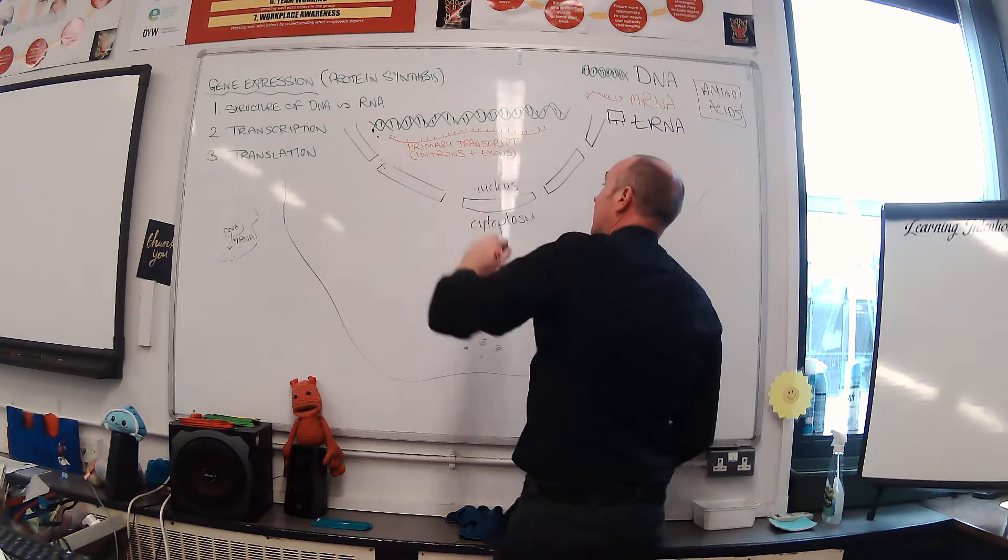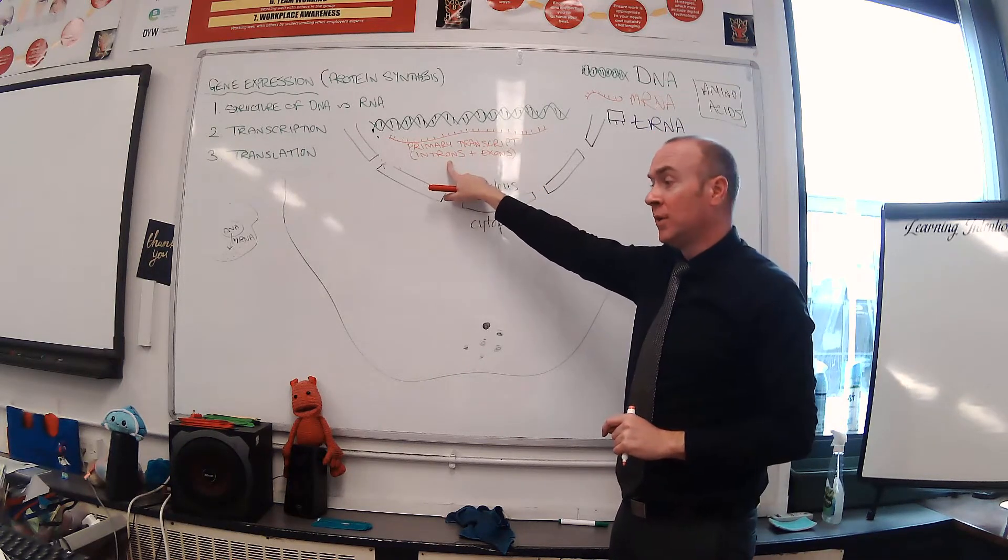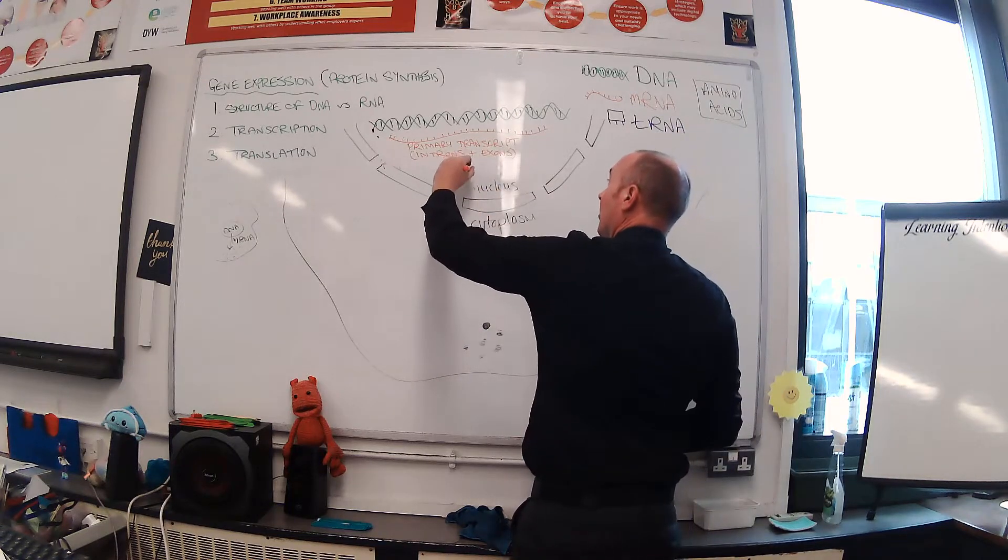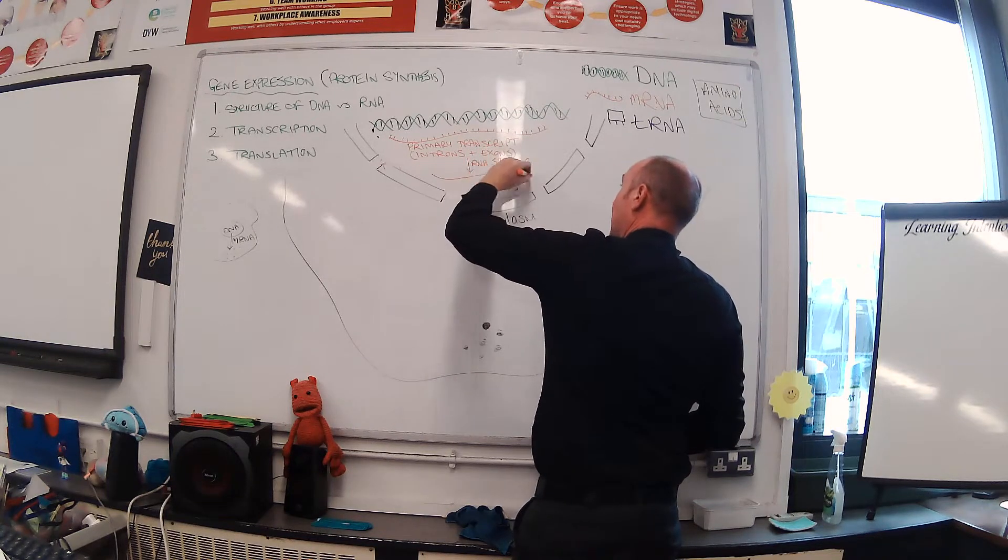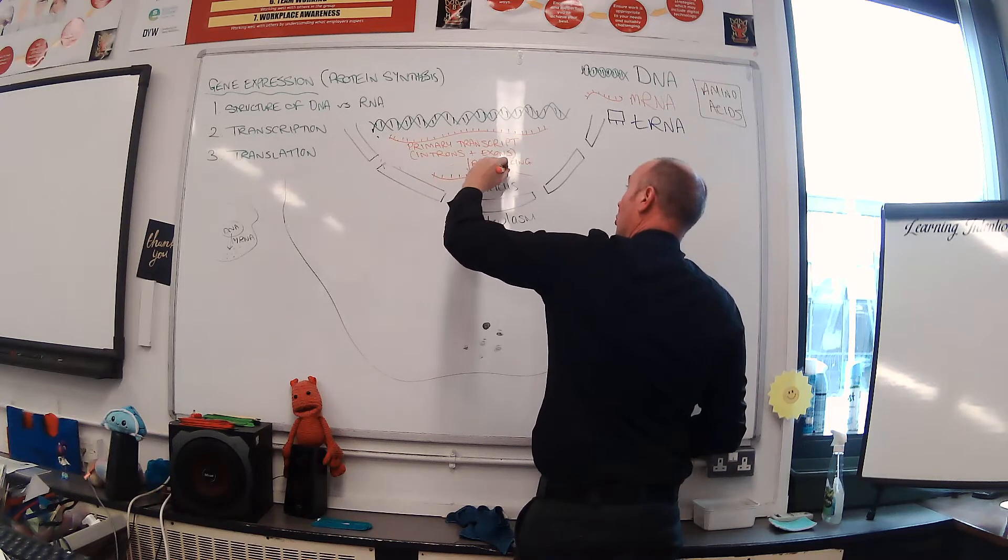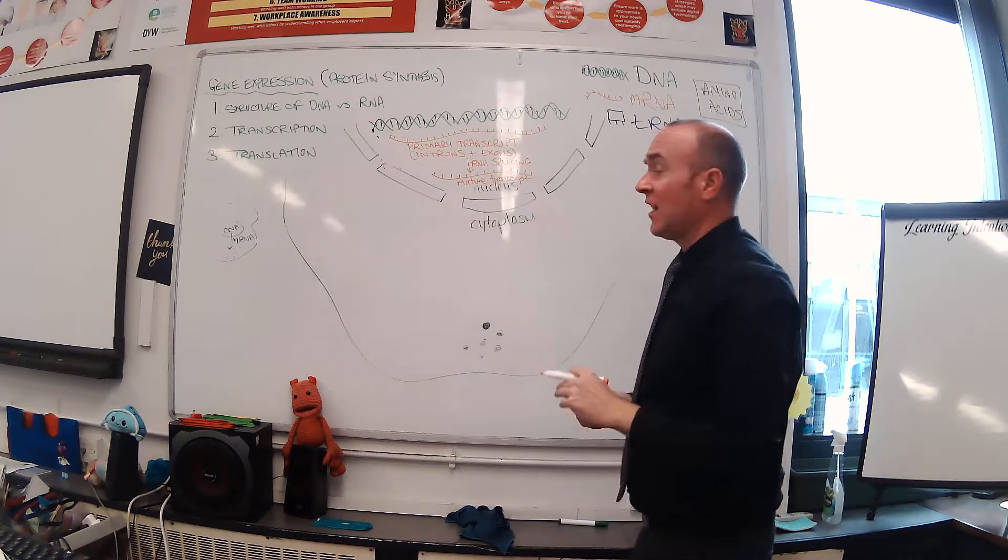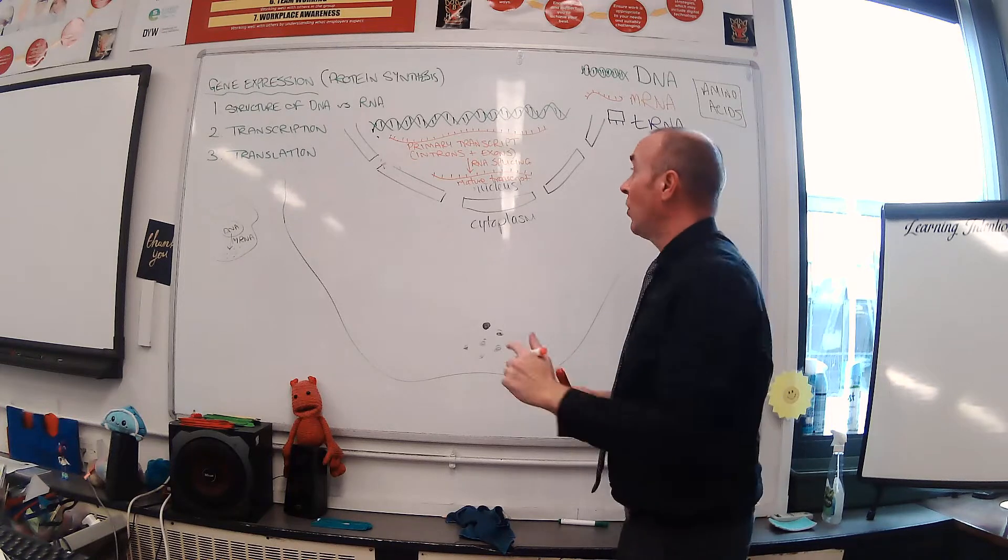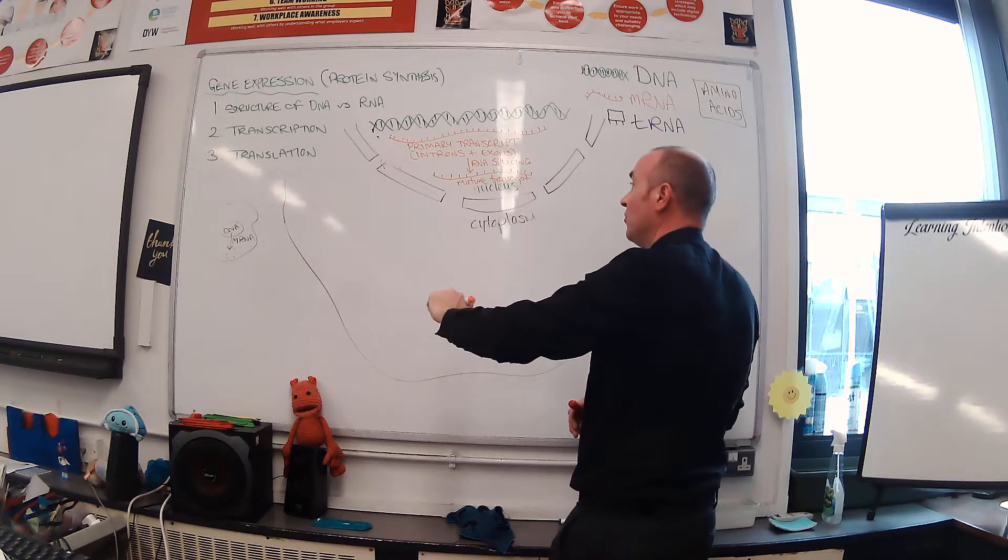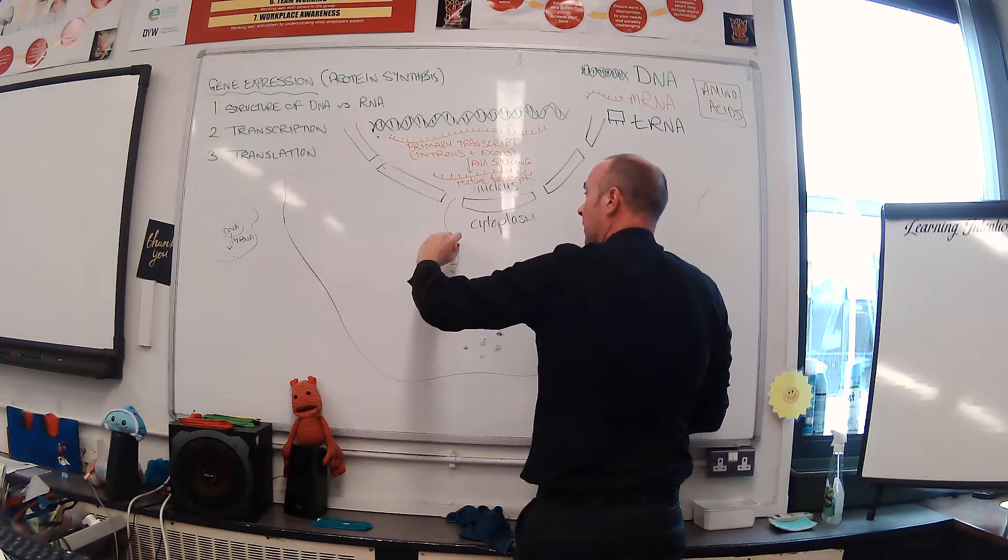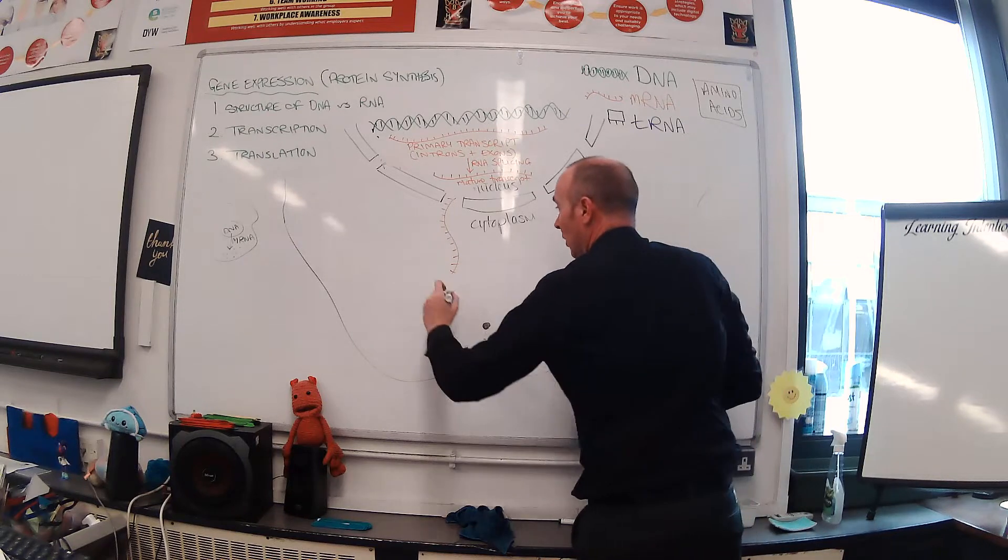The reason why it's called a primary transcript is because it still has areas which we need to get rid of because they are non-coding regions called introns. It also has exons, the parts that will code for amino acids. The introns need to be removed through a process of RNA splicing. What we end up with is the mature transcript, which consists only of exons.